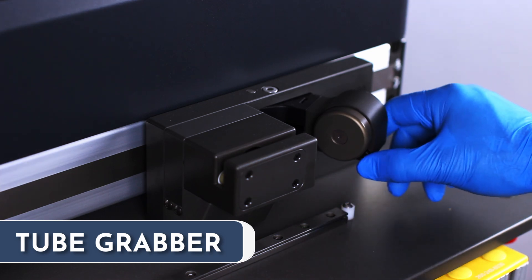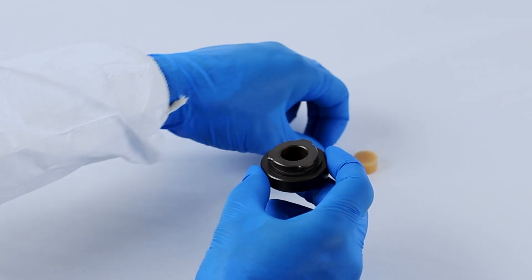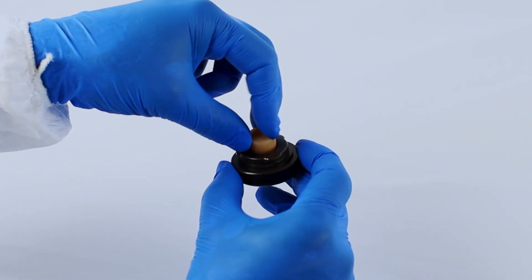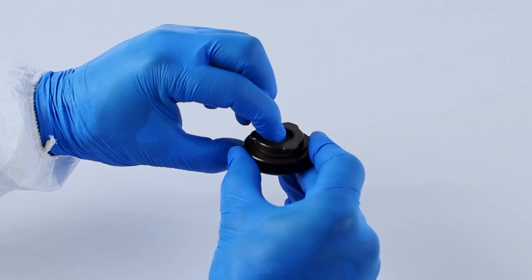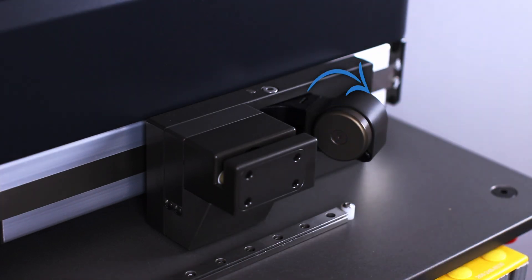On the tube grabber, press and hold the button, then rotate the cover counterclockwise to remove it. Place one washer into the cover, then push the seal in until fully seated. Reinstall the cover and rotate clockwise until the button clicks into place.